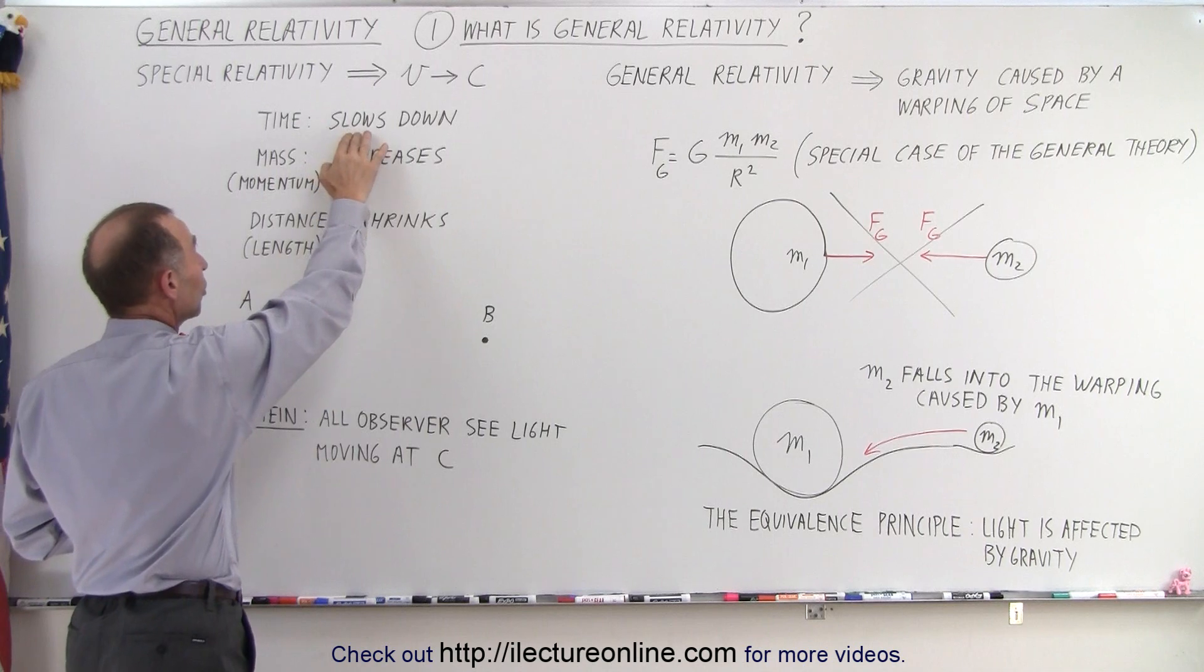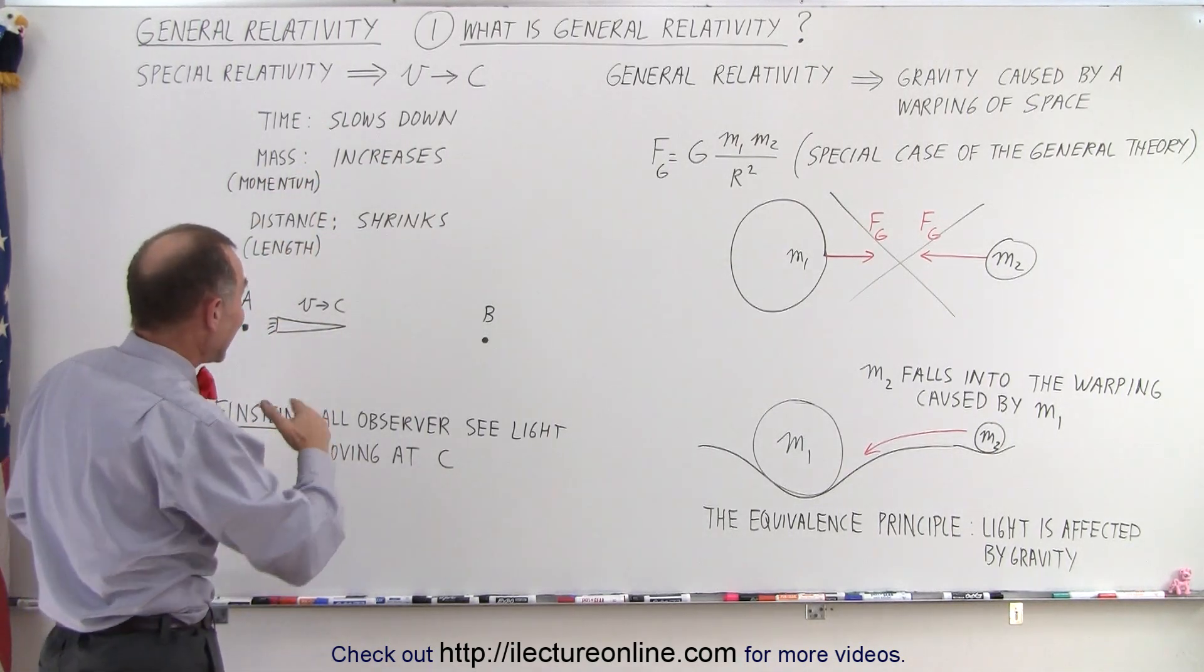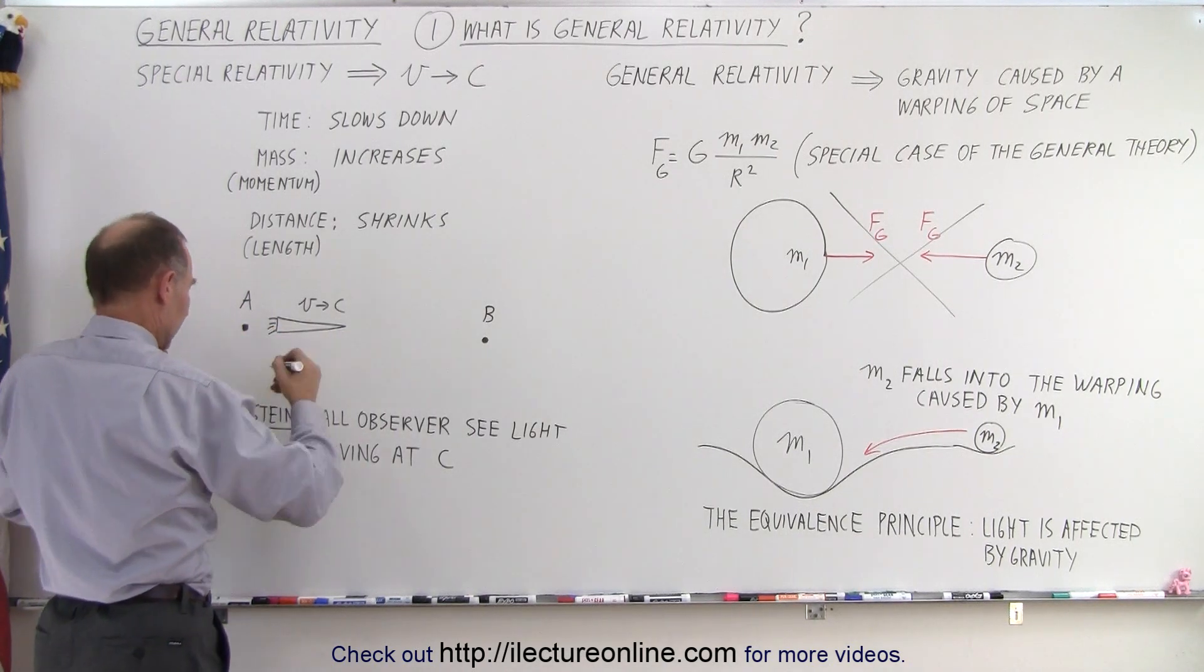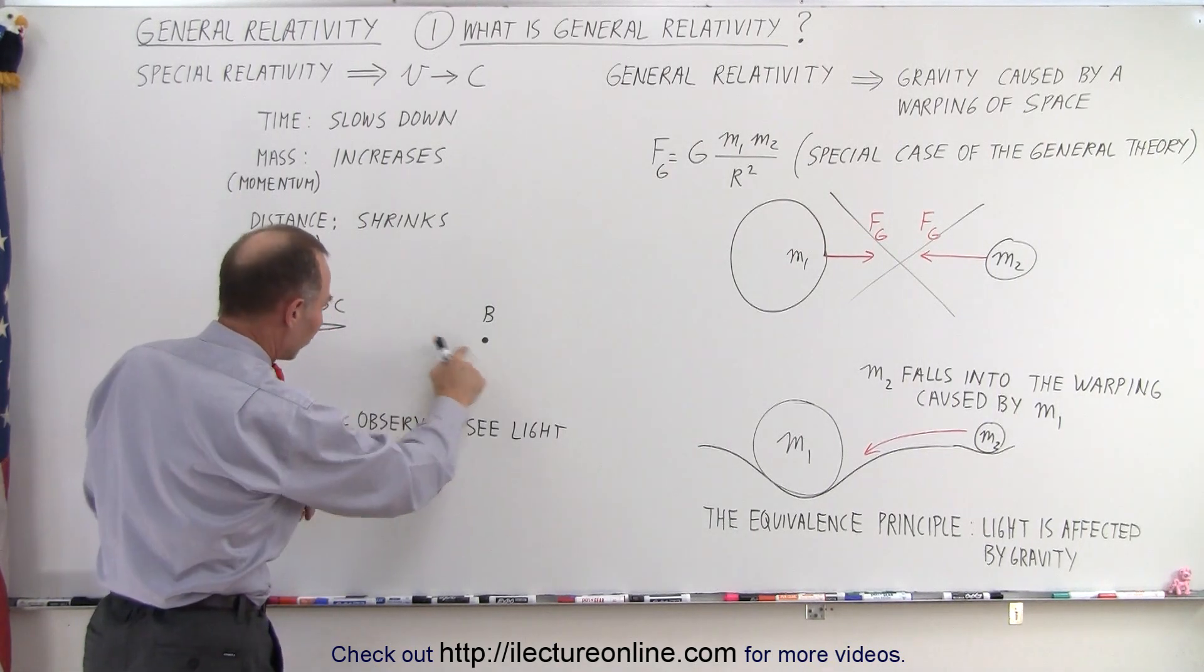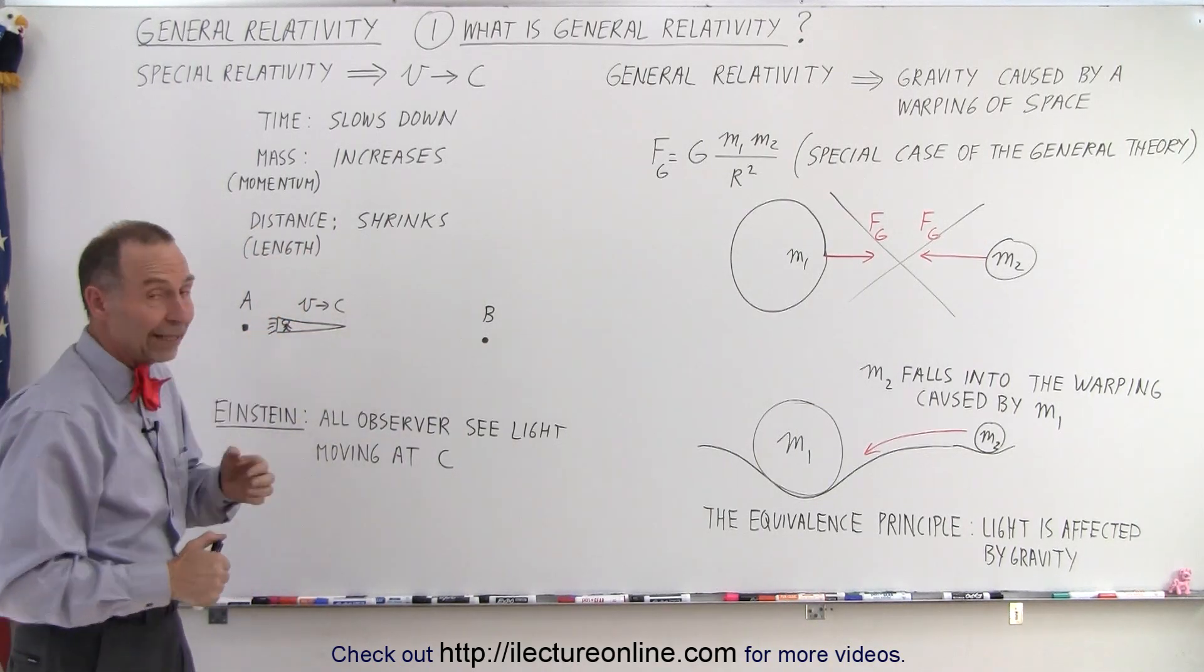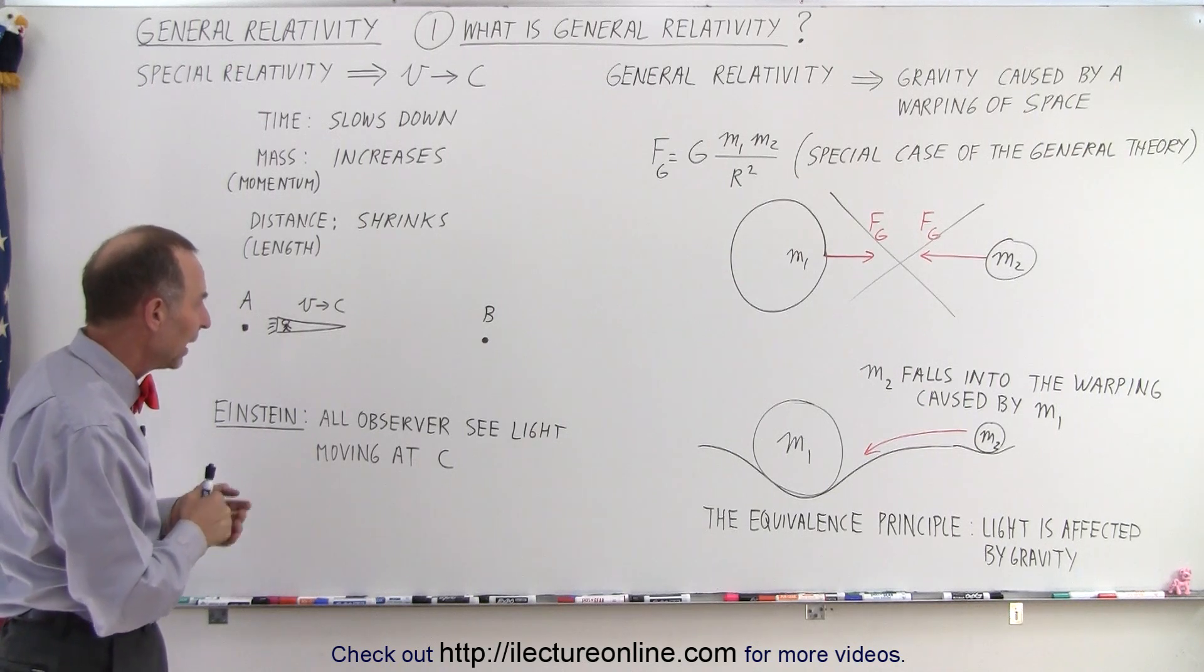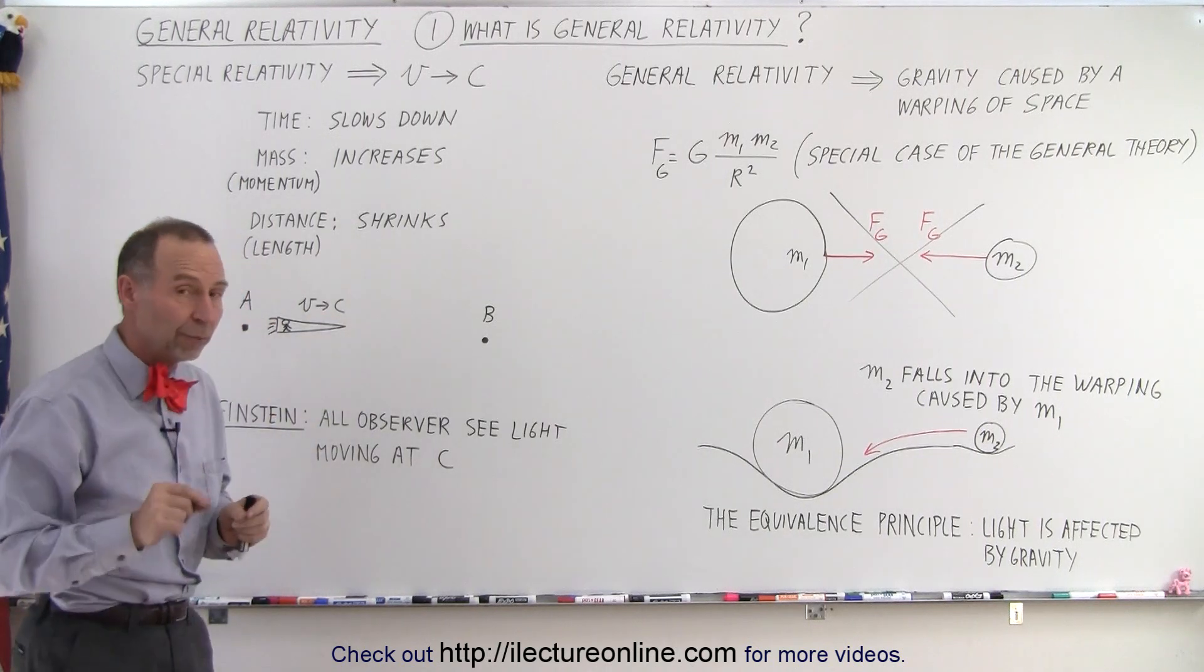For example, time begins to slow down for the traveler. The mass, or better said, the momentum of the object increases, and the distance, or the length, shrinks in the direction of travel. So, let's say that somebody, some observer, is in the spaceship. And the spaceship is traveling to a faraway place from, and starting from A and traveling to B. And the spaceship is beginning to approach the speed of light. C stands for the speed of light, and it's 300,000 kilometers per second, or 186,000 miles per second. As the spaceship begins to increase and goes faster and faster and begins to reach close to the speed of light,